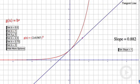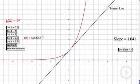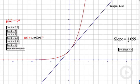Let's take a look at some particular values. When b equals 2, again the slope is 0.693. When b is 3, the slope is 1.099. So that makes me wonder, where's the slope equal to 1?